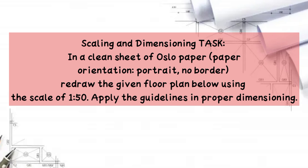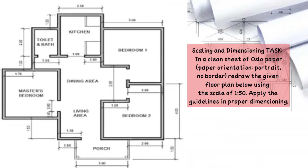Let us do the task on scaling and dimensioning. We have here an example of a floor plan. What you are going to do is redraw the given floor plan using the scale of 1 to 80. Apply and follow the guidelines in proper dimensioning. Remember: the smaller the number used in the metric scale, the bigger the size in the triangular scale, and the larger the number used, the smaller the size. If you don't have a triangular scale, you can divide all measurements by 0.50, since we are going to redraw using the scale of 1 to 50.